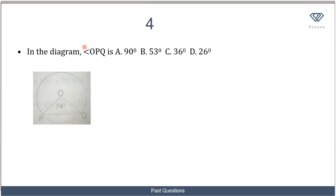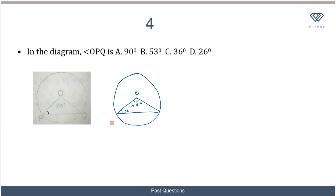In the next question, we are told that in the diagram, we should find angle OPQ. Let me draw it out clearly. You have a circle with the center here, and two radii drawn to the circumference. The angle at the center is 74 degrees. Any line from the center of the circle to the circumference is called a radius, so both sides are equal, making this an isosceles triangle. The two base angles are therefore equal — both are angle x.